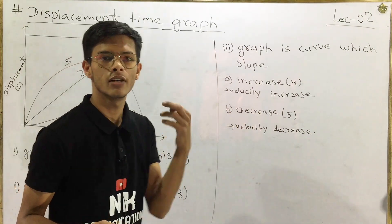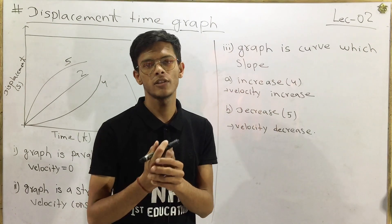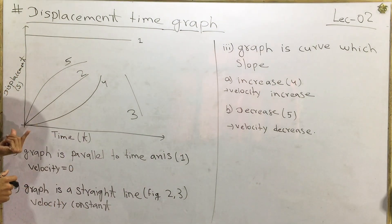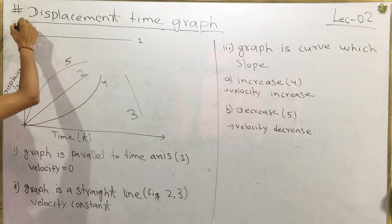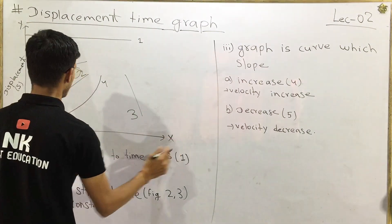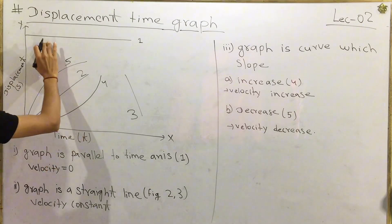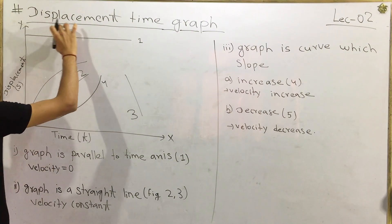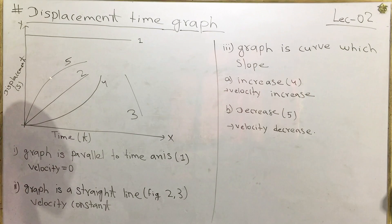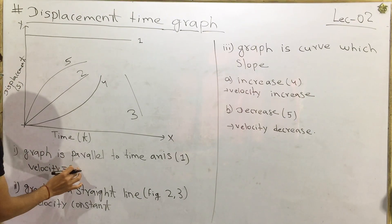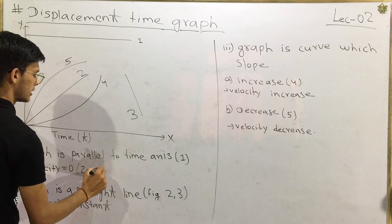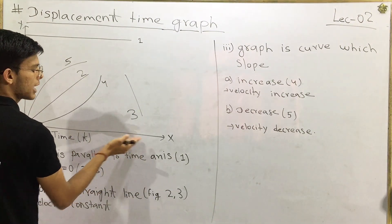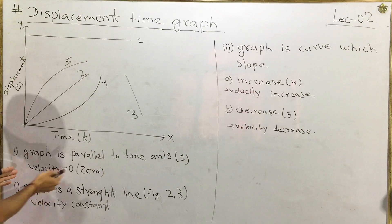We will cover displacement, velocity and speed. The y-axis and x-axis are set up for the graph. When the displacement time graph is parallel to the time axis, the velocity is zero.